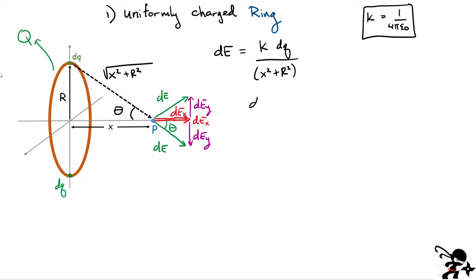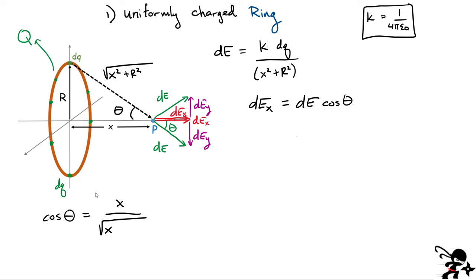Our total electric field is only going to have an X component. What I have to do now is integrate all of the X components produced by all of these charges when I go around the ring. Each charge produces an X component of the field equal to the magnitude DE multiplied by cos of the angle theta. Now, cos of theta is the same for every single charge on the ring. Using the trigonometry from this triangle, cos theta is simply equal to X over the hypotenuse, which is the square root of X squared plus R squared.